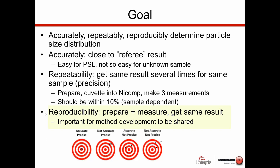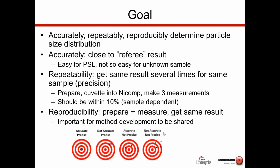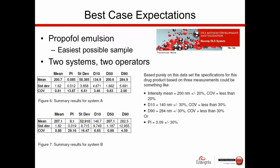Reproducibility is especially important when we want to create a method and then transfer it to another location. These are three ways we can define whether we are making a good measurement, and now we'll take a quick diversion into the world of method development and expectations when using dynamic light scattering.